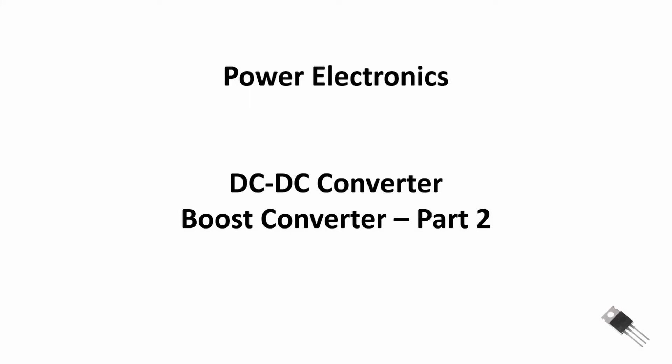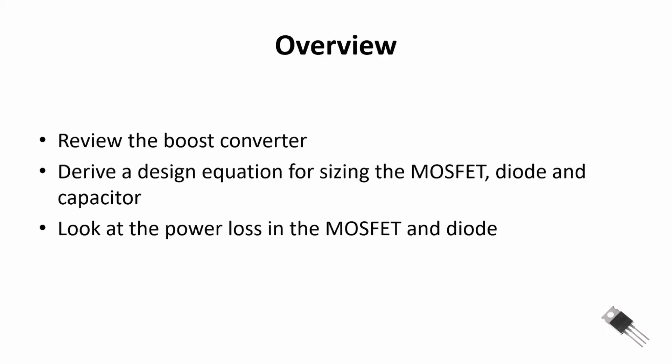Welcome back to Power Electronics. We are covering boost converters as part of our DC-to-DC converter sequence, and this is the second part. Here's the overview: we'll first review the boost converter and look at input/output voltage relationships, then derive design equations for sizing the MOSFET, diode, and capacitor based on output ripple and switching frequency. Then we'll look at power loss in the MOSFET and diode, which contribute the most loss in switch-mode power supplies.